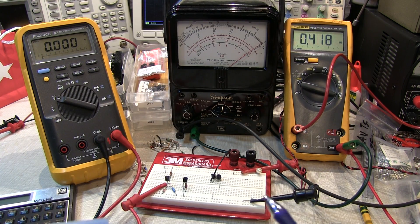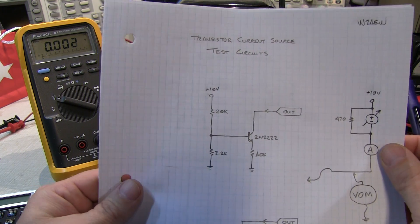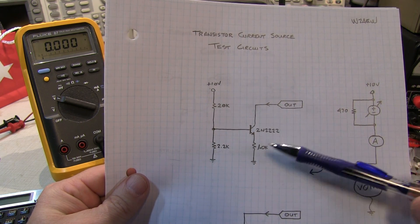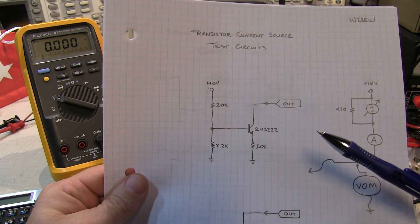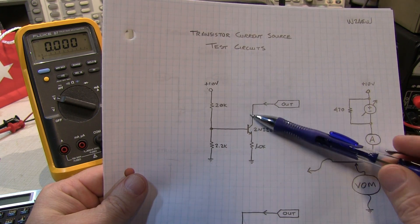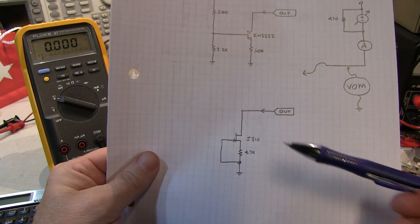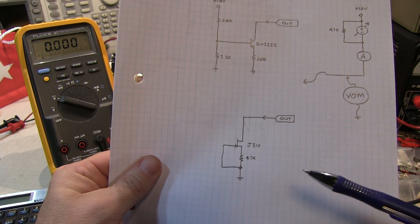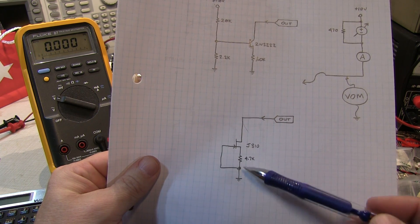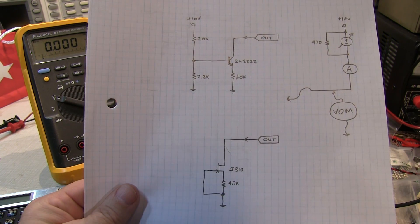On the breadboard I've got a couple of different current sources. There's a very simple circuit with a 20k and 2.2k resistor to set up a bias voltage on the transistor, which sets up a fixed voltage across the emitter resistor to get the current sink output. I also have a JFET current source set up — a simple J310 n-channel JFET with a 4.7k resistor. Both of these are very simple fixed current sources.